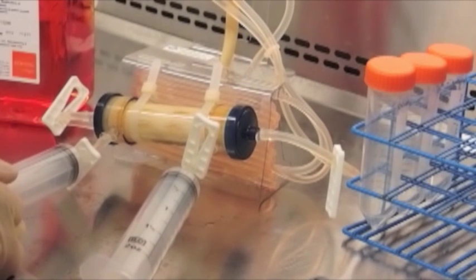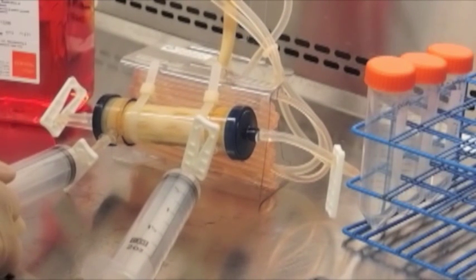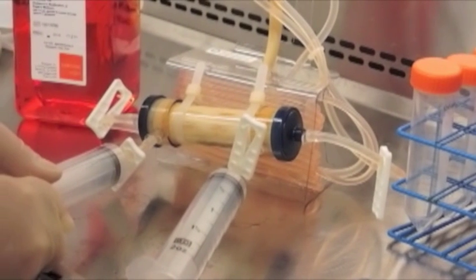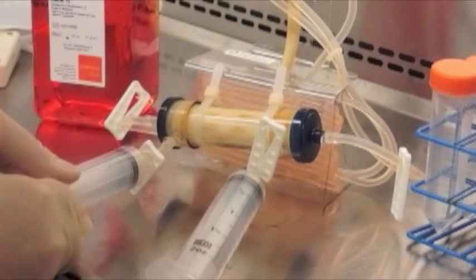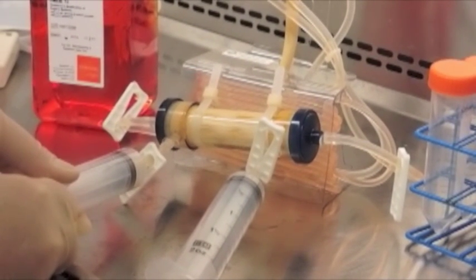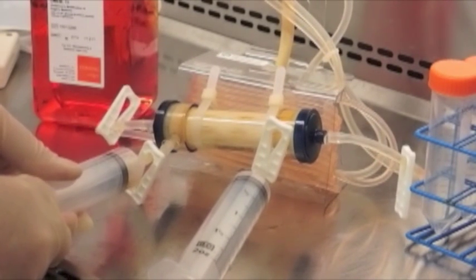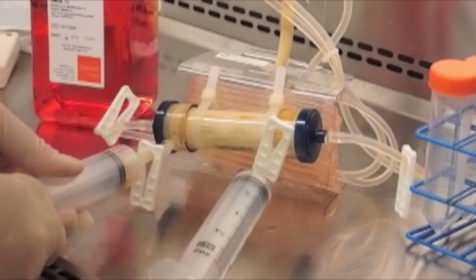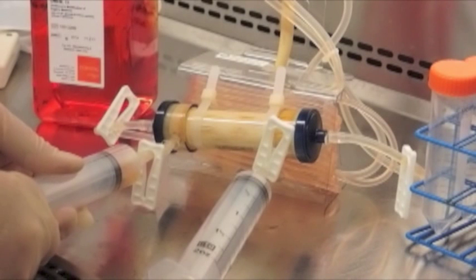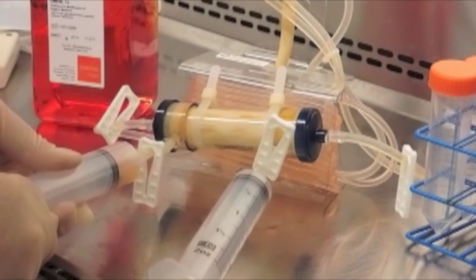You can see the cells growing at very high density here inside the cartridge. 1 times 10 to the eighth cells was seeded into this cartridge 18 days previously, and the glucose uptake rate was monitored daily. After the culture period, it is evident that there's a large number of cells present within the fiber.